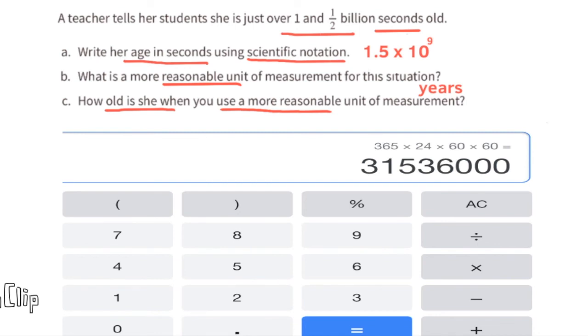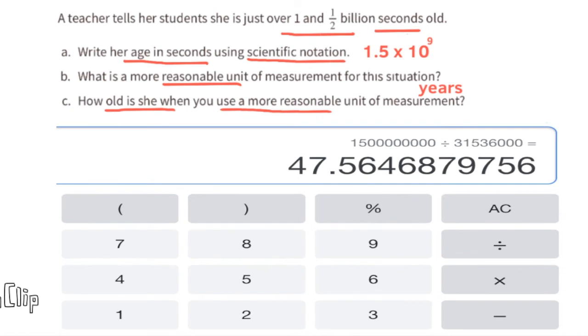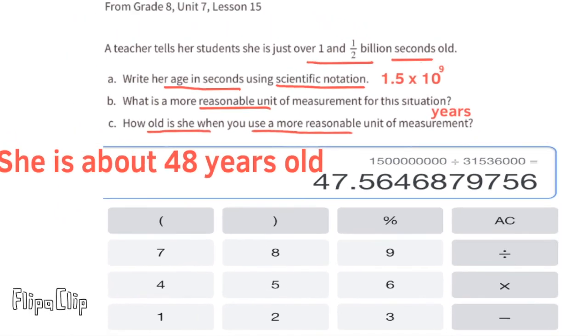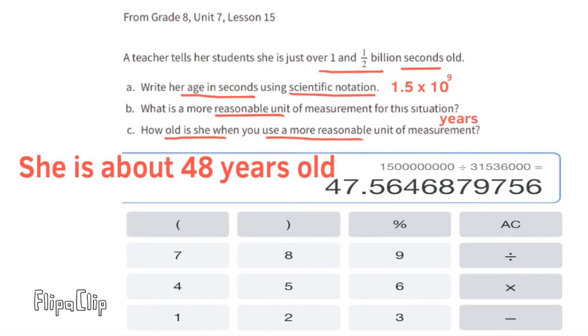And I get 31,536,000 seconds in a year. So 1.5 times 10 to the power of 9 divided by 31,536,000 seconds is about 47.6 years. So she's almost 48 years old.